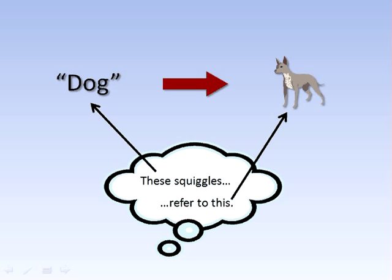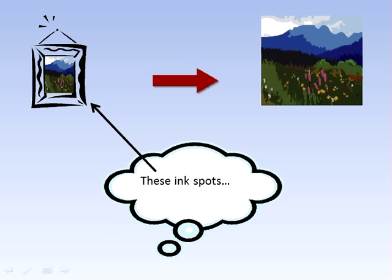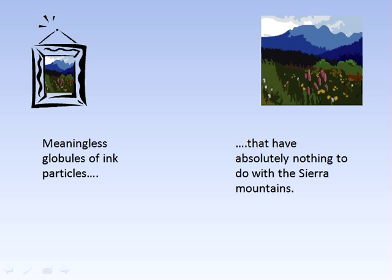An arrow or a picture only points to its referent because we assign meaning to it. Without us doing so, the picture doesn't actually refer to anything. Meaningless globs of ink particles don't have anything to do with the Sierra Mountains at all.